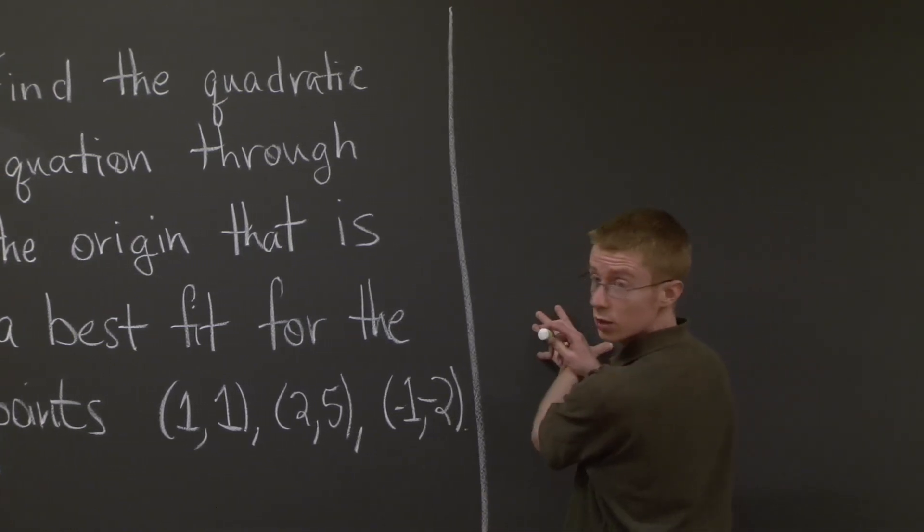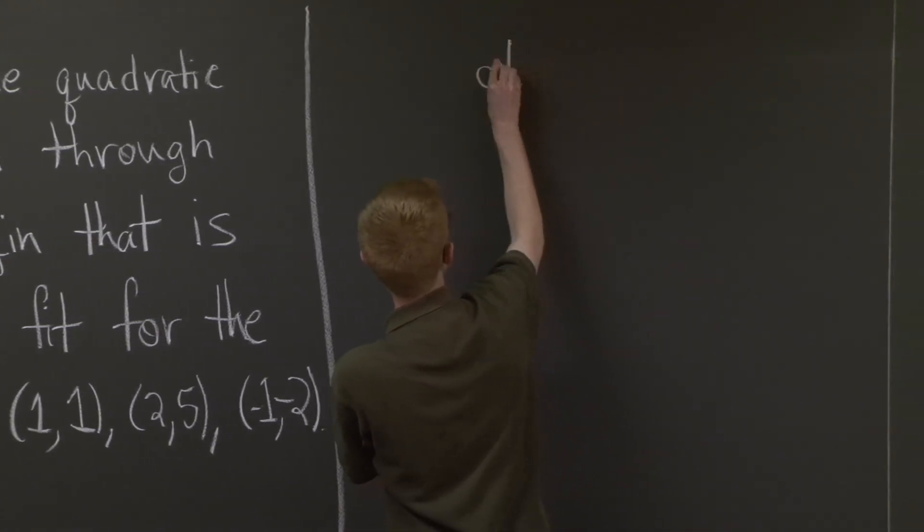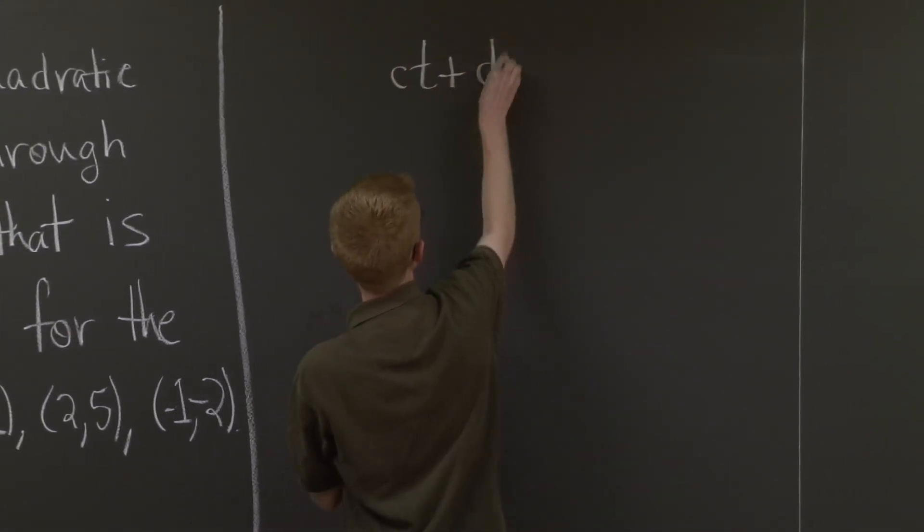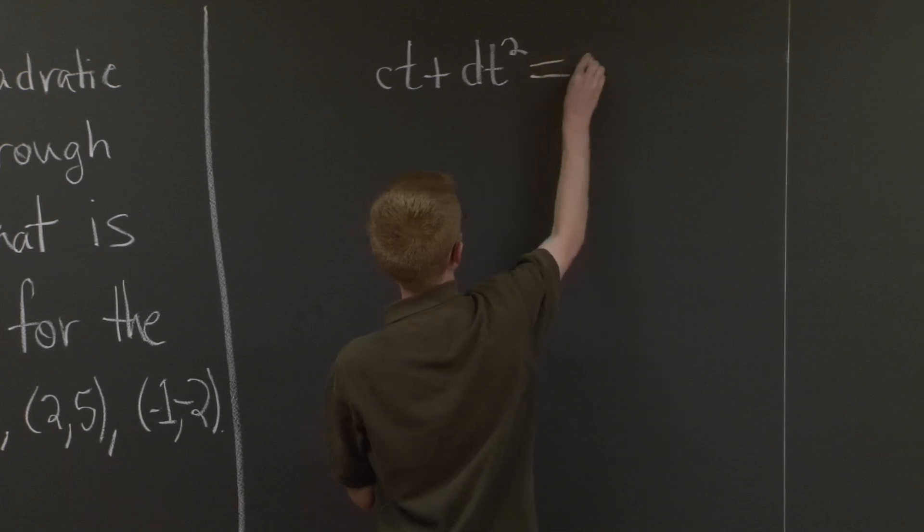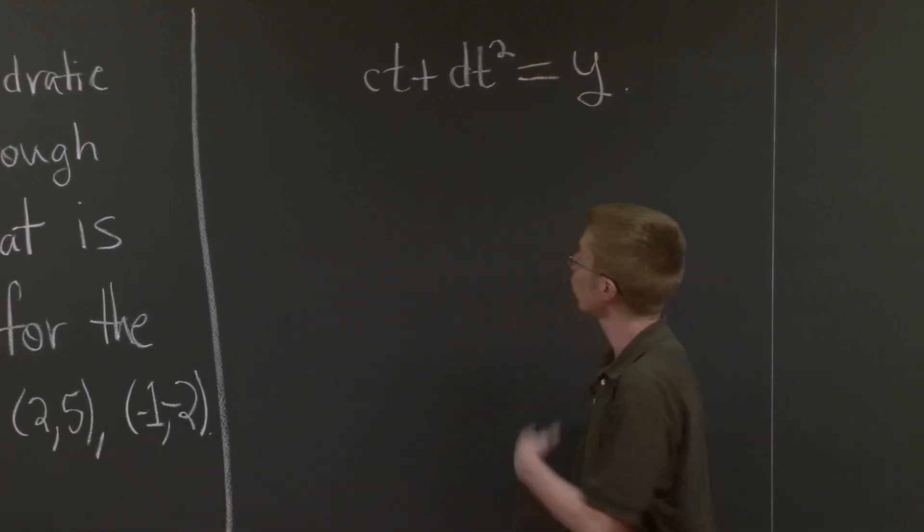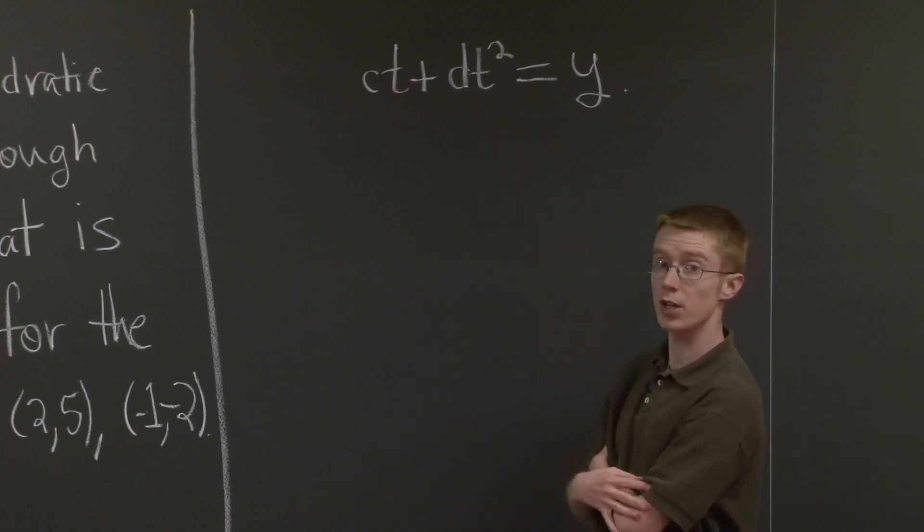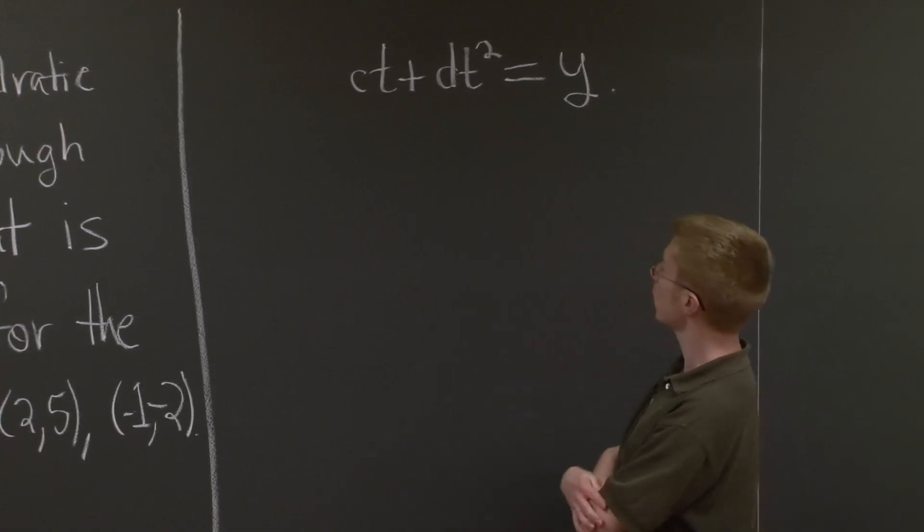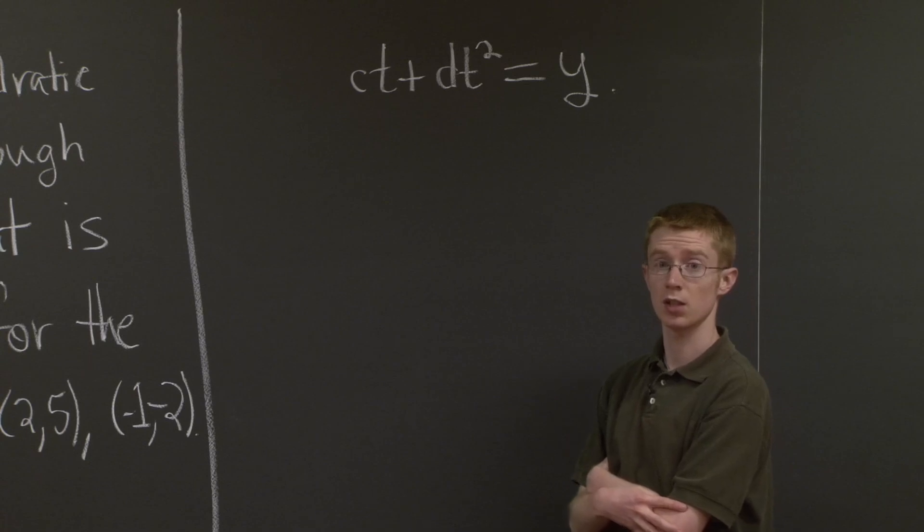So our equation is going to look like ct + dt² = y. So that's what we're looking for. We're looking for a quadratic equation through the origin. Now if it were just any quadratic equation, then we would have a constant term. But through the origin just means that the constant term is 0.